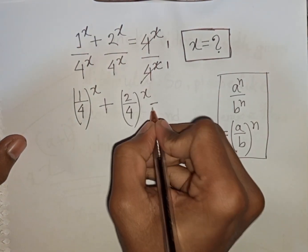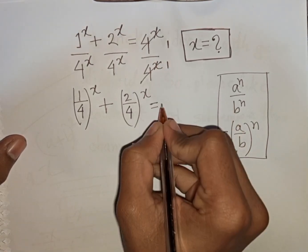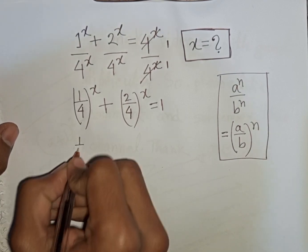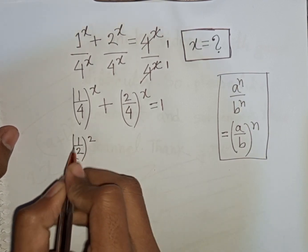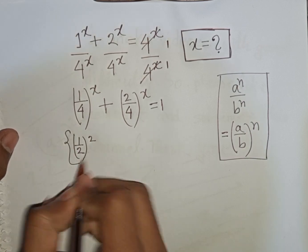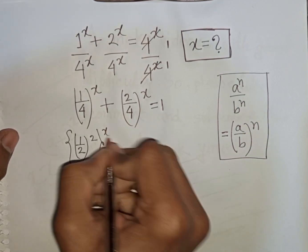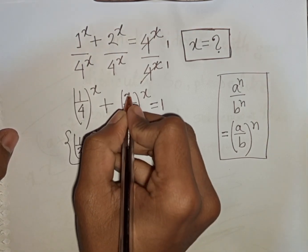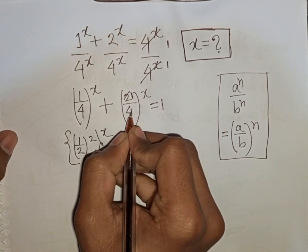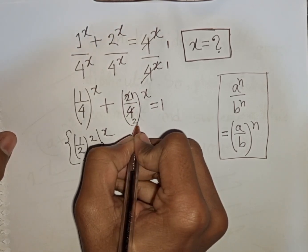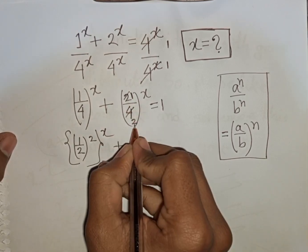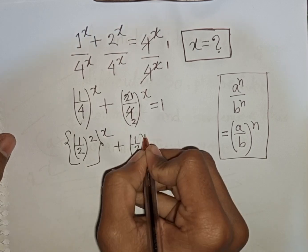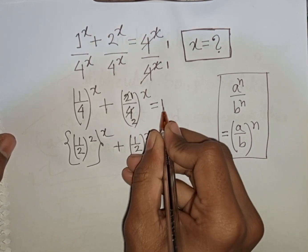Then the right side equals 1. Now, 1 over 4 can be written as (1 over 2) bracket power 2. Then the first bracket can be written as the second bracket power of x, plus 2 divided by 2 equals 1. Since 4 divided by 2 is 2, we have (1 over 2) bracket power x, so (1 over 2) bracket power x is equal to 1.